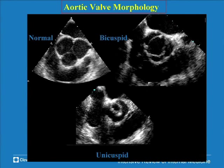The less common but equally important congenital anomaly is the unicuspid valve, where there is only one commissure. Instead of opening along the full diameter of the aorta, it opens on the radius — like a buttonhole. This is almost always stenotic, often very severely so in early life. These patients present with stenosis in adolescence or early adulthood.